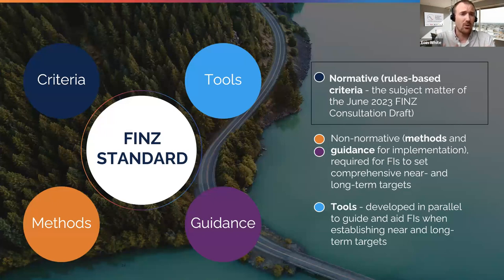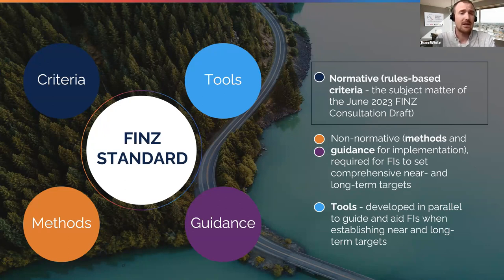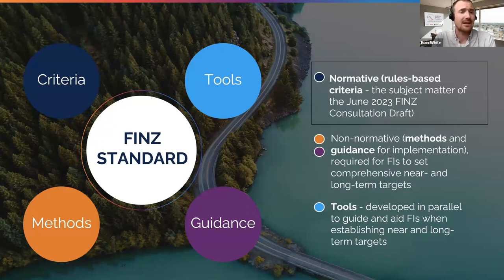As with all SBTI work, standards have four key components: criteria, methods, guidance, and tools. This consultation draft is primarily focused on criteria — the qualitative and quantitative requirements for near- and long-term targets. In parallel, we are working on methods and guidance that will complement this, determining the types of metrics financial institutions can use when establishing those targets. This will be published alongside tools to help FIs establish targets. The standard is designed to allow flexibility to integrate new methods as they develop.